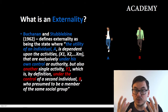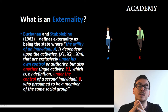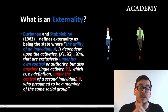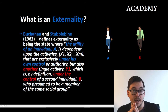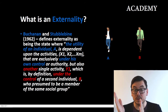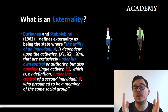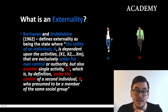Those two individuals are in the same social group, so whatever B does with this activity will affect individual A. This effect can of course be positive or negative, and that is why we typically talk about positive or negative externalities.